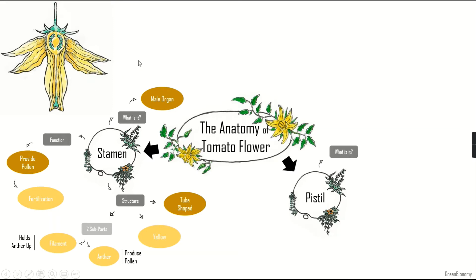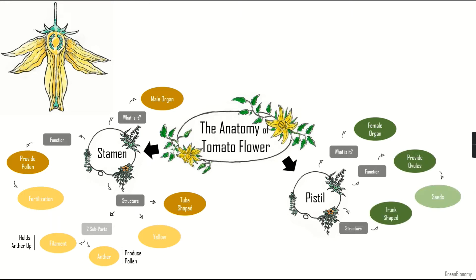The second part is the pistil — the female organ, which is surrounded by the stamen. The function of the female organ is to provide ovules which will become seeds. The pistil is trunk-shaped and slightly greenish, not as yellow as the male organ. Other flowers can have different colors and structures, but the principles are the same in terms of the functions of the male and female organs.